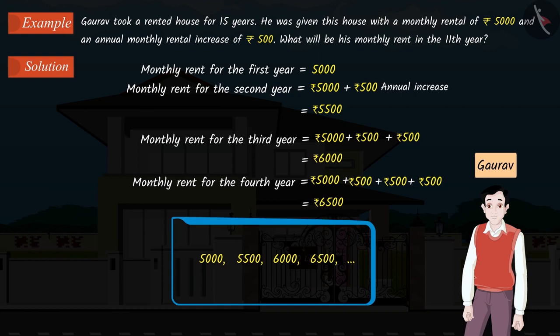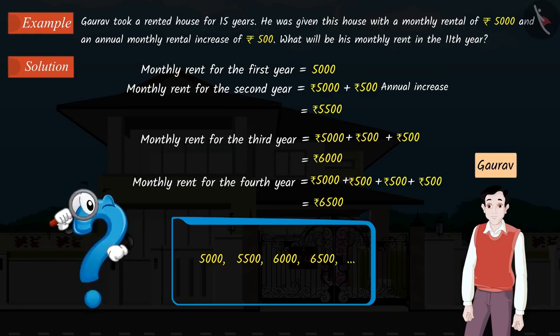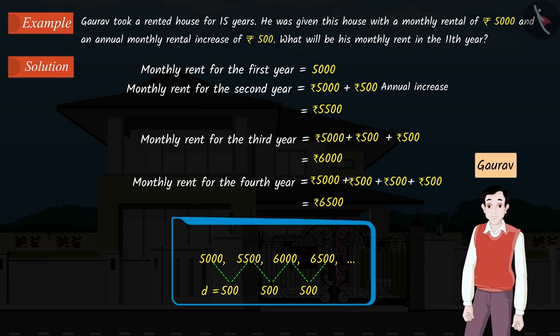If we observe carefully, we can see a pattern here. Can you tell me whether this is an arithmetic progression or not? Well done! This is an AP.